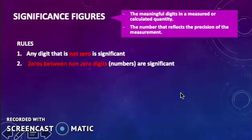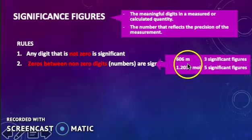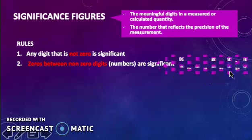Rule number 2, zeros between non-zero digits are significant. Thus, 606 meter has 3 significant figures, 1.2034 mom has 5 significant figures.